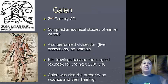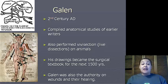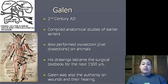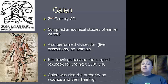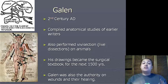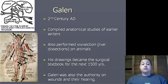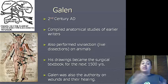Aelius Galenus, also known as Galen, was a 2nd century AD scientist who compiled anatomical studies from earlier writers. He also performed his own vivisections, or live dissections, on animals, specifically dogs. His drawings and gatherings of information became the surgical textbook used for the next 1500 years. He was also the authority on wounds and how they healed.